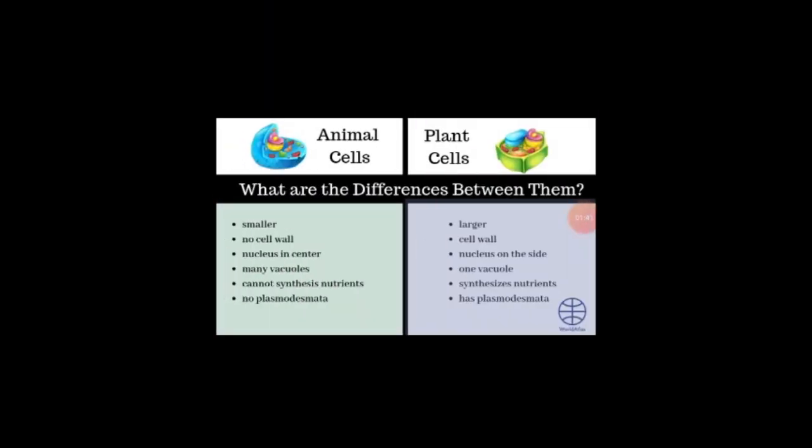The differences between animal and plant cells: animal cells are smaller while plant cells are larger. Animal cells have no cell wall while plant cells have a cell wall. The nucleus is present in the center in animal cells while it is present on the side in plant cells. Many vacuoles are present in animal cells while one large vacuole is present in plant cells. Animal cells cannot synthesize nutrients while plant cells can. Animal cells have no plasmodesmata while plant cells do.